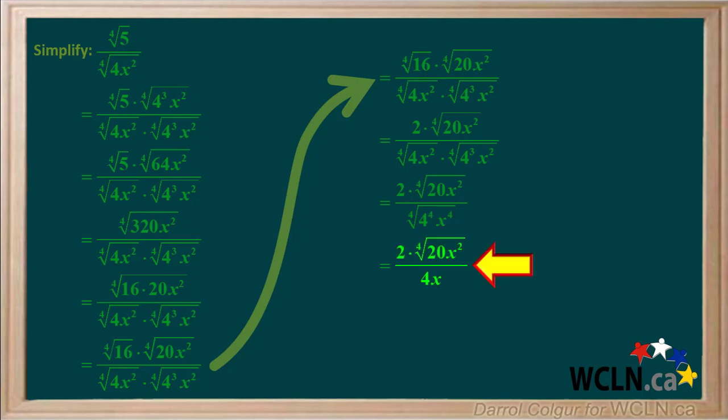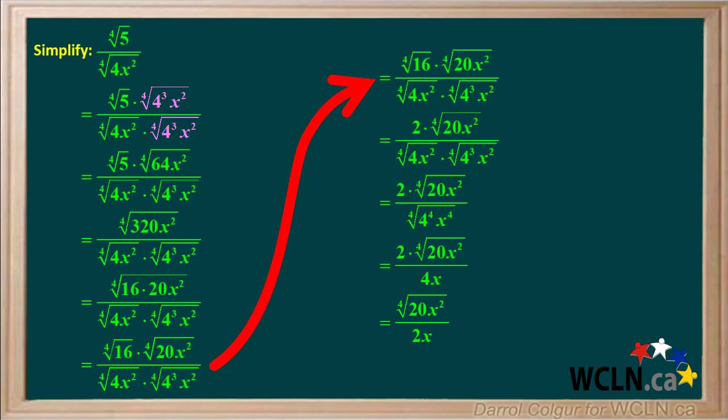So we're left with 2 times the fourth root of 20x squared over 4x. We can divide the numerator and denominator by 2 to give us the final answer: the fourth root of 20x squared over 2x. Here's the entire solution to this problem. If you like, you can pause the video and review all the steps yourself.